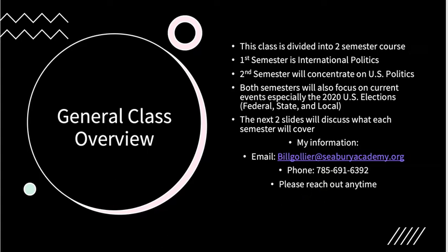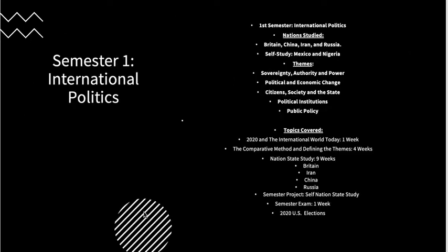Now let's get to what we're going to cover each semester. First semester we'll be talking about international politics. We'll be studying the countries of Great Britain, China, Iran, and Russia. We'll also do a self-study of Mexico and Nigeria. The themes we'll be looking at with each of these nation-states are sovereignty, authority, and power; political and economic change; citizens, society, and the state; political institutions; as well as public policy.